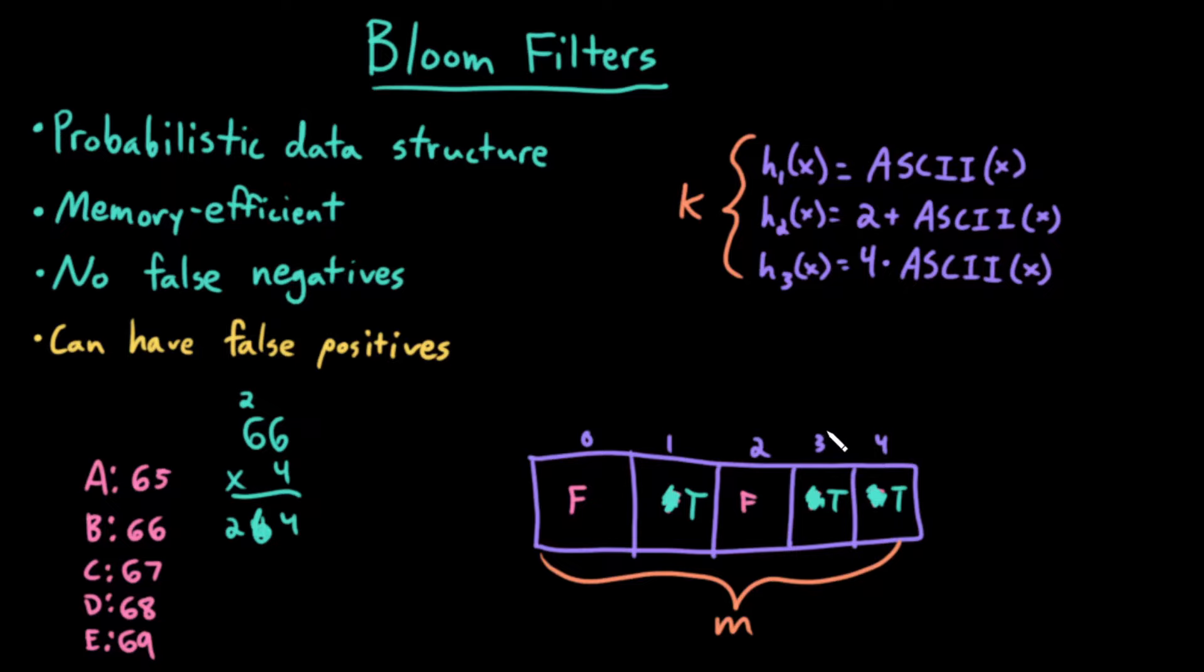So now, what if I want to see if d exists in this bloom filter? I would look at the first hash function. So d, the ASCII value is 68, 68 mod 5 is 3, so that bit is true. Maybe d exists in this bloom filter.